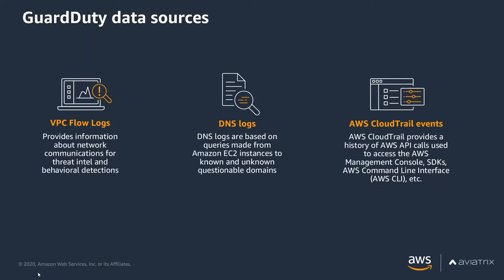DNS logs are DNS query logs using the internal VPC DNS resolver. Using this, we can analyze all of the domains that your instances are querying and compare that to a threat intelligence list. And lastly, CloudTrail logs to identify activity to the API from potentially malicious IP addresses, and also to build machine learning models to understand what is normal activity for a given user in your account.